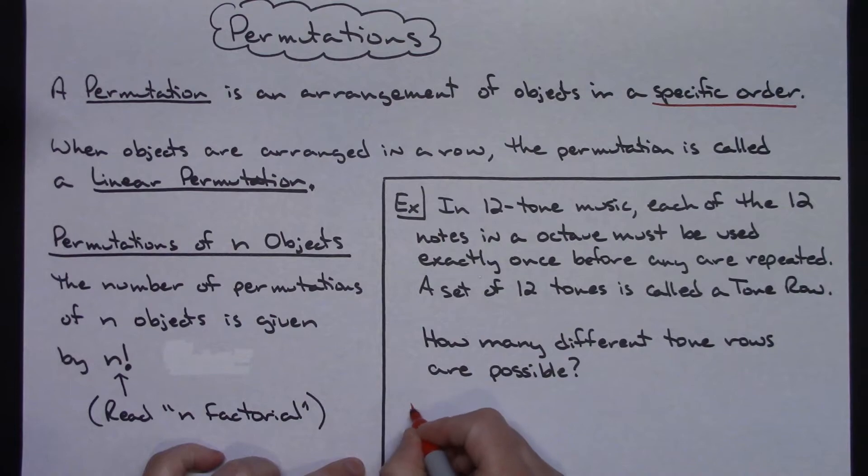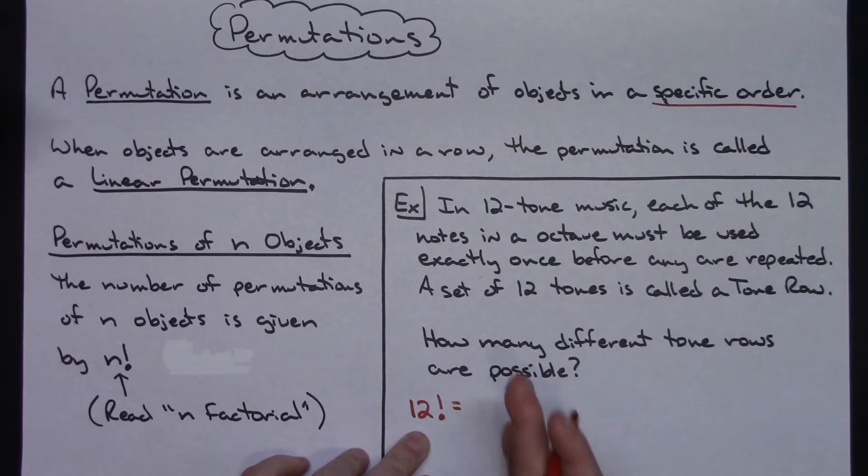So 12 factorial is written like that. Now in general, a factorial: you start with whatever number you are given in the factorial and then you multiply every number all the way down to 1.